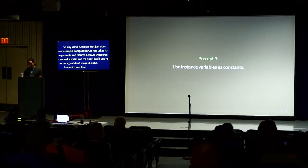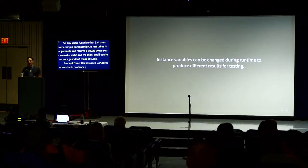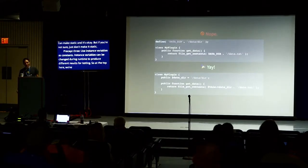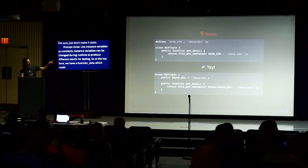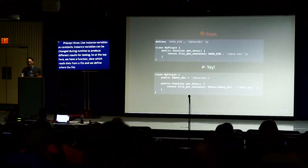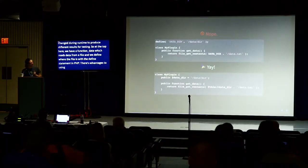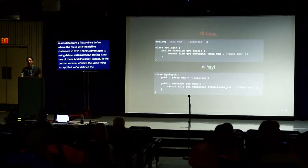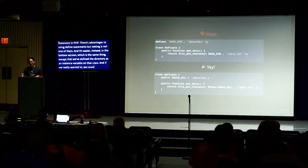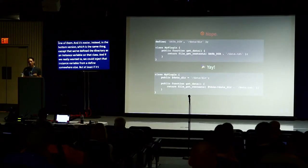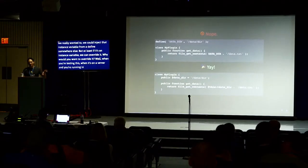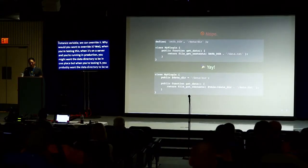Precept three: use instance variables as constants. Instance variables can be changed during runtime to produce different results for testing. At the top, we have a function getData that reads data from a file, where we define the file path using a PHP define statement. Using define has advantages but testing is not one of them. The bottom version defines the directory as an instance variable on the class instead. We can then override it — for example, when testing you probably want the data directory to be somewhere fake, not accessing real data.